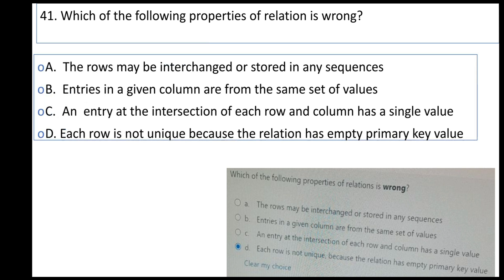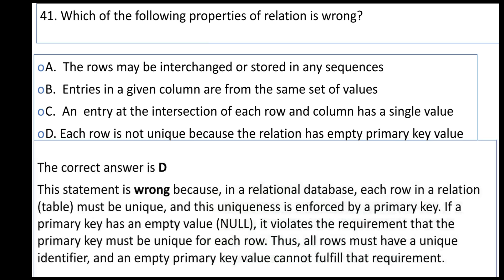Each row must be unique. The statement that each row is not unique is false. In a relational database, each row in a relation table must be unique, and this uniqueness is enforced by a primary key. If a primary key has a null value, it violates the requirement that primary keys must be unique for each row.